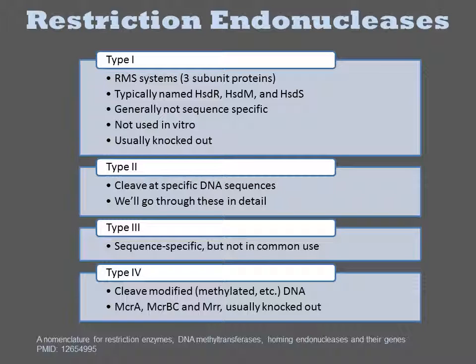Restriction endonucleases are classified into four types. Type 1 endonucleases are typified by the RMS systems present in prokaryotic genomes. In E. coli they are named HsdR, M, and S. These endonucleases play the native immunological role of preventing infection with foreign DNAs. They recognize some molecular pattern, but this pattern is poorly defined and cannot be reduced to a simple sequence. These enzymes are not used in any in vitro DNA manipulation protocols, but they are relevant because knocking them out is necessary for efficient transformation of E. coli.